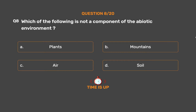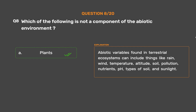The correct answer is Option A: Plants. Abiotic variables found in terrestrial ecosystems can include things like rain, wind, temperature, altitude, soil, pollution, nutrients, pH, types of soil, and sunlight.